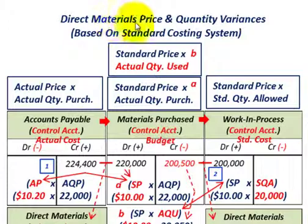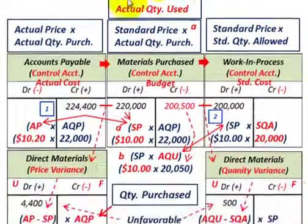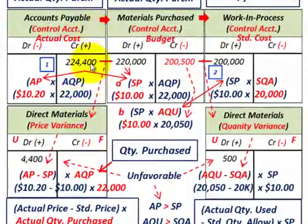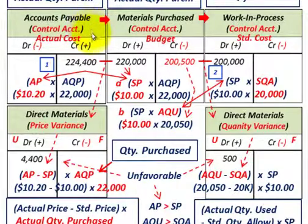What we're going to be going over here is direct materials price and quantity variances, and we're going to be calculating those based on the standard costing system. I've got it laid out in T-account form here, so to understand what's going on with these variances, let's trace through these T-accounts to get an overview, and then we'll get into the details.